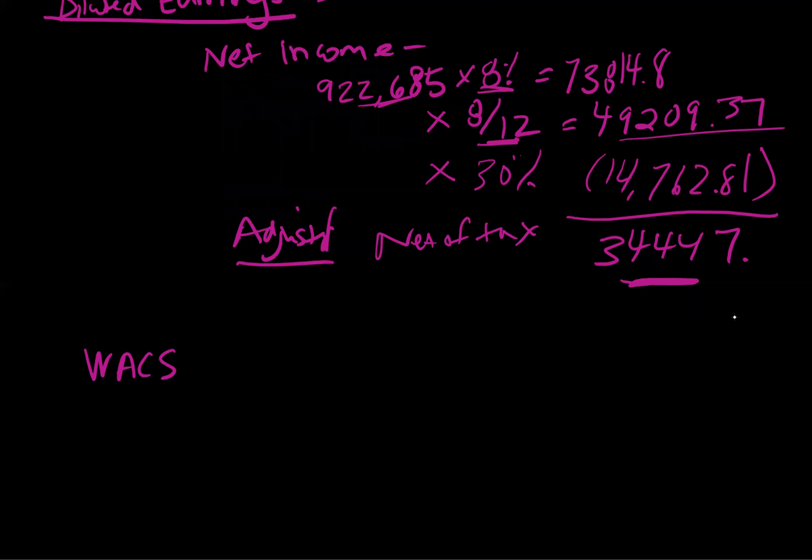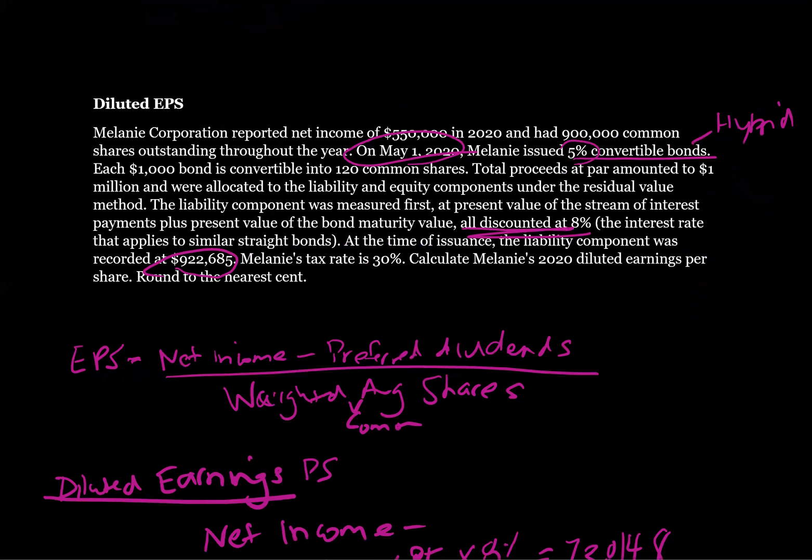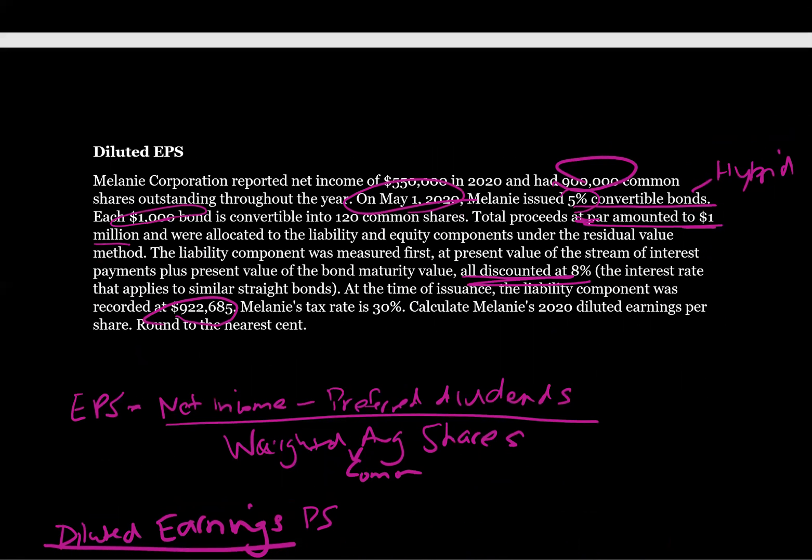So then what about the weighted average common shares? We had previous to this adjustment, we had 900,000 shares outstanding, which was given in the question. And then we're going to convert these bonds. So it says that bonds had a million dollars at par, a million proceeds at par, and each bond has a face value of $1,000, and each $1,000 bond is convertible into 120 shares.